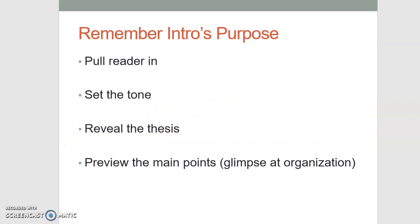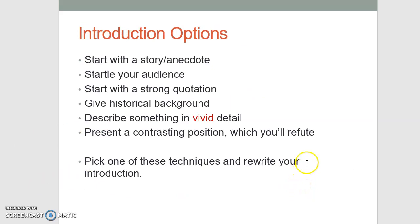Moving on, there are several options you can use for attention-getting introductions. You can start with a story or an anecdote — as I did with the reference to Jack Jablonski and his hockey accident. An anecdote might also be a hypothetical, something that could happen but isn't necessarily a real story. You can startle your audience through alarming statistics or a jarring story. You can start with a strong quotation from a person the audience might know, or a particularly evocative and beautifully worded quote. You can also give some historical background, as we did with the hockey example by discussing recent judgments on Hockey Canada.